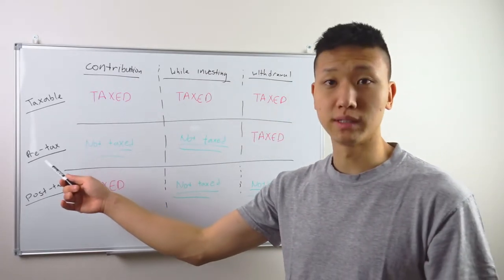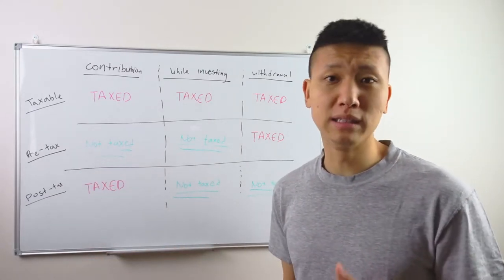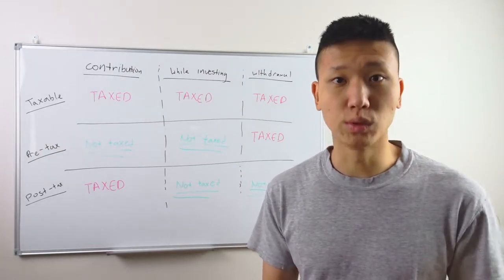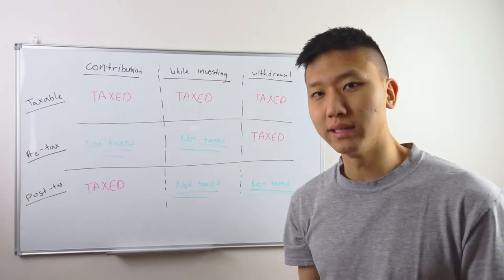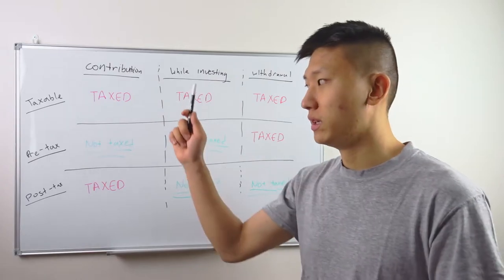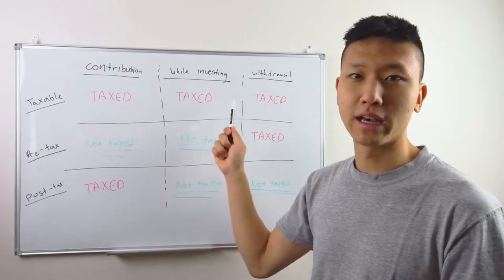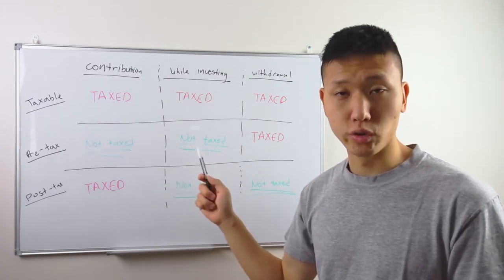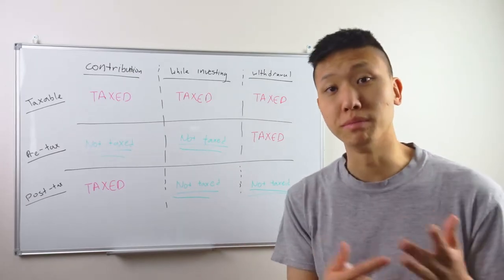Before diving in, pre-tax and post-tax are more related to long-term investing. They have limits on when and how much you can contribute, and when and how much you can take out — that's a downside. But the upside is that you're able to avoid paying some of these taxes. Compared to taxable accounts, which are taxed at each point, with these accounts you're avoiding taxes at some checkpoints. With pre-tax, you don't need to pay income tax on the amount you put in.